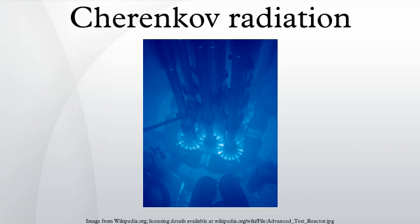Cherenkov radiation results when a charged particle, most commonly an electron, travels through a dielectric medium with a speed greater than that at which light would otherwise propagate in the same medium. Moreover, the velocity that must be exceeded is the phase velocity of light rather than the group velocity of light. The phase velocity can be altered dramatically by employing a periodic medium, and in that case one can even achieve Cherenkov radiation with no minimum particle velocity, a phenomenon known as the Smith-Purcell effect.